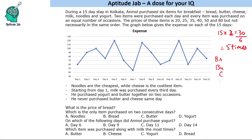The set involves cheese, milk, noodles, and yogurt. The graph below gives the expense on each of the 15 days, showing his total spending on each of these 15 days.